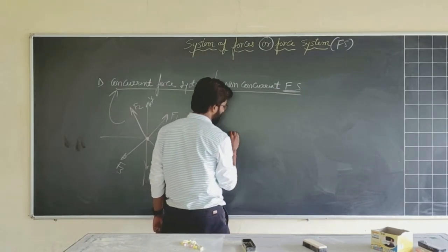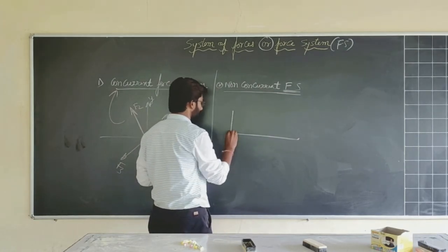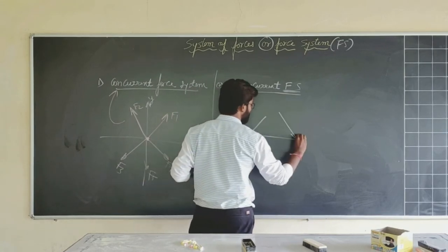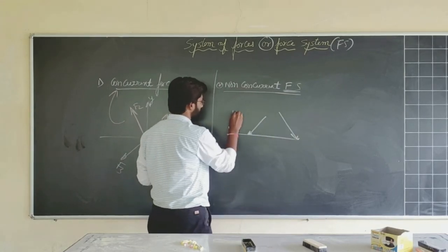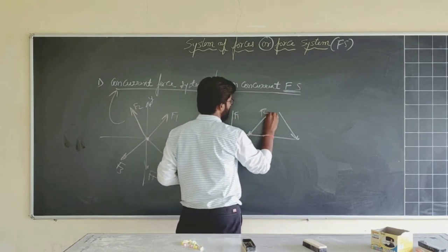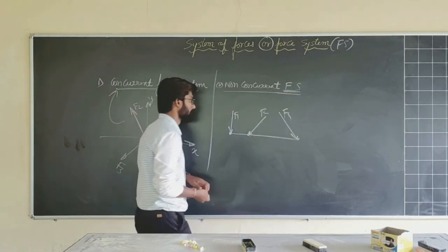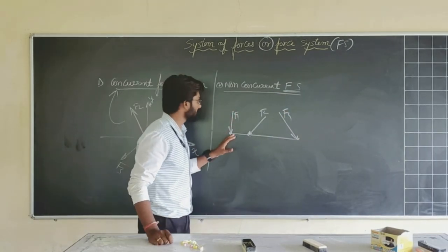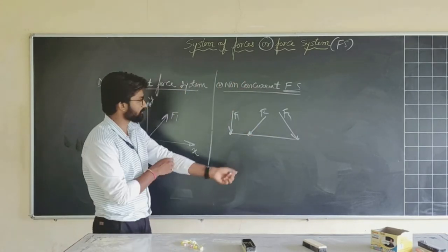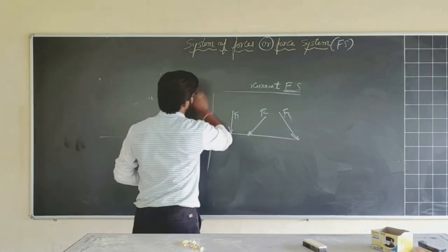A non-concurrent force system is one where the forces act at different points — their points of application are different. For example, F1, F2, and F3 each have different points of application and are not acting at a single common point, so this is a non-concurrent force system.